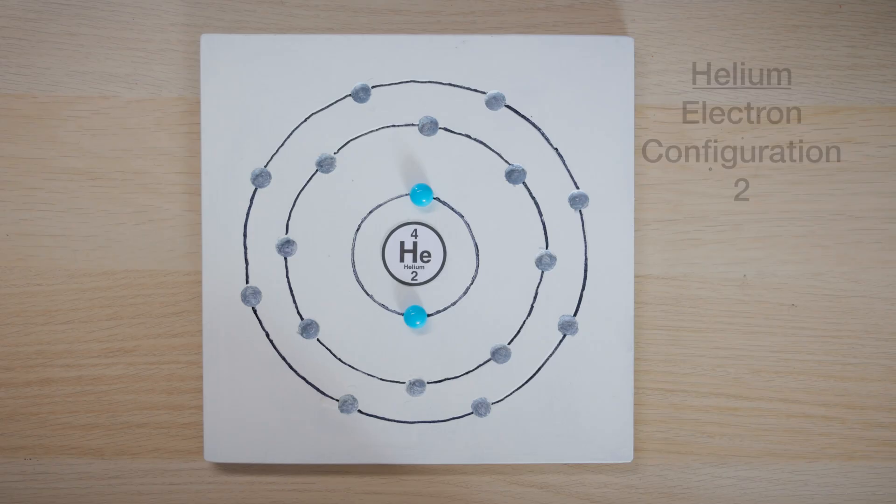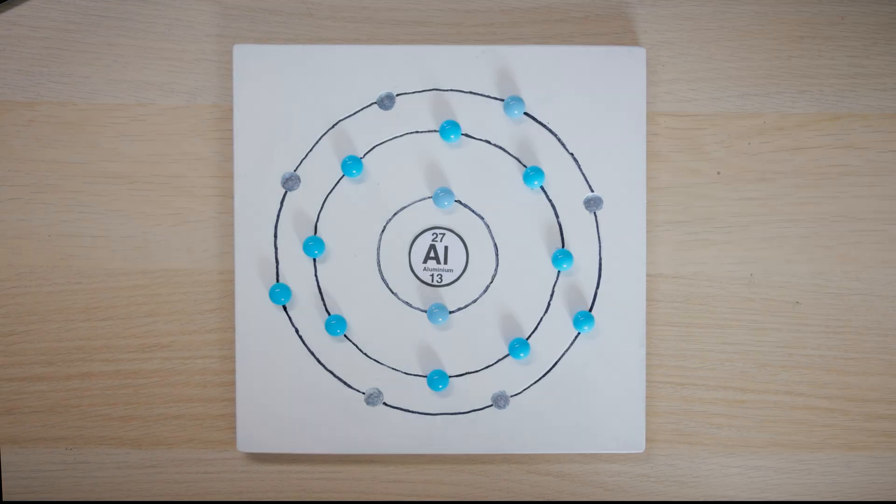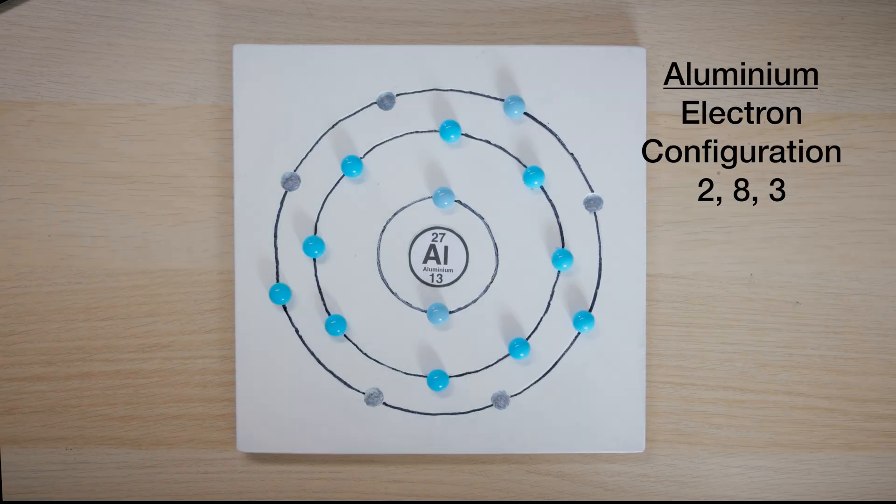Hopefully that's pretty straightforward so far. We call these placements the electron configurations of the atoms, and we have a shorthand way of writing them down. We write the number of electrons in each orbit, or shell as we sometimes call them, and separate those values with a comma. So helium is just the number two, carbon is two comma four, and aluminium will be two comma eight comma three.